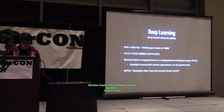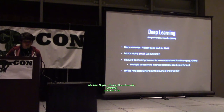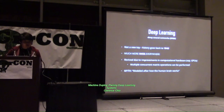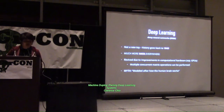Deep learning is not a new toy — it was developed in 1943, funded by the DoD. The reason it's so popular now is because there's just much more data everywhere. The amount of data generated in the last two years is greater than what we generated as a whole civilization prior to that. It's also revived due to improvements in computational hardware. With GPUs, you can compute multiple concurrent matrix operations, which greatly improves the speed at which you can generate intelligence with machine learning.